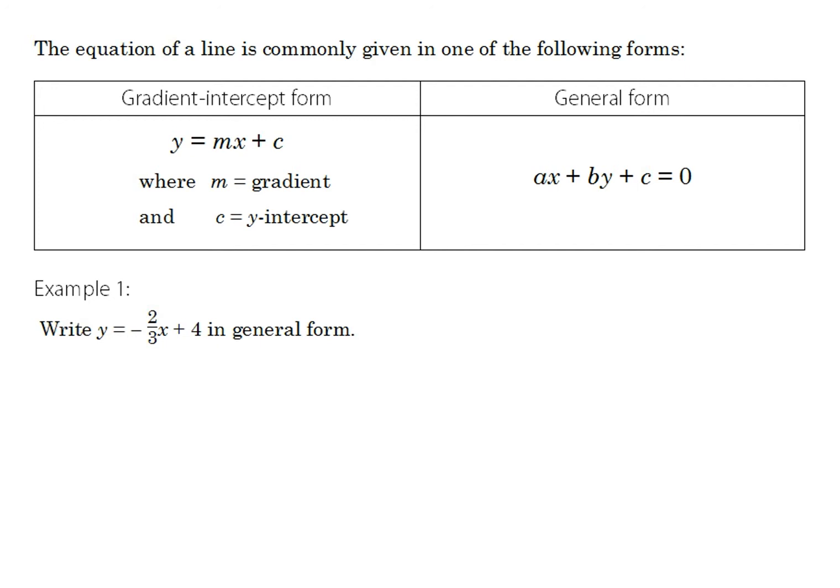There are two main forms in which we may be given the equation of a straight line. The first is y equals mx plus c — commonly referred to as y equals mx plus b in other areas — but regardless of the pronumerals, we mean y equals a number times x plus another number. The second is general form: a number times x plus a number times y plus a number equals zero, or sometimes equals a number on the right-hand side.